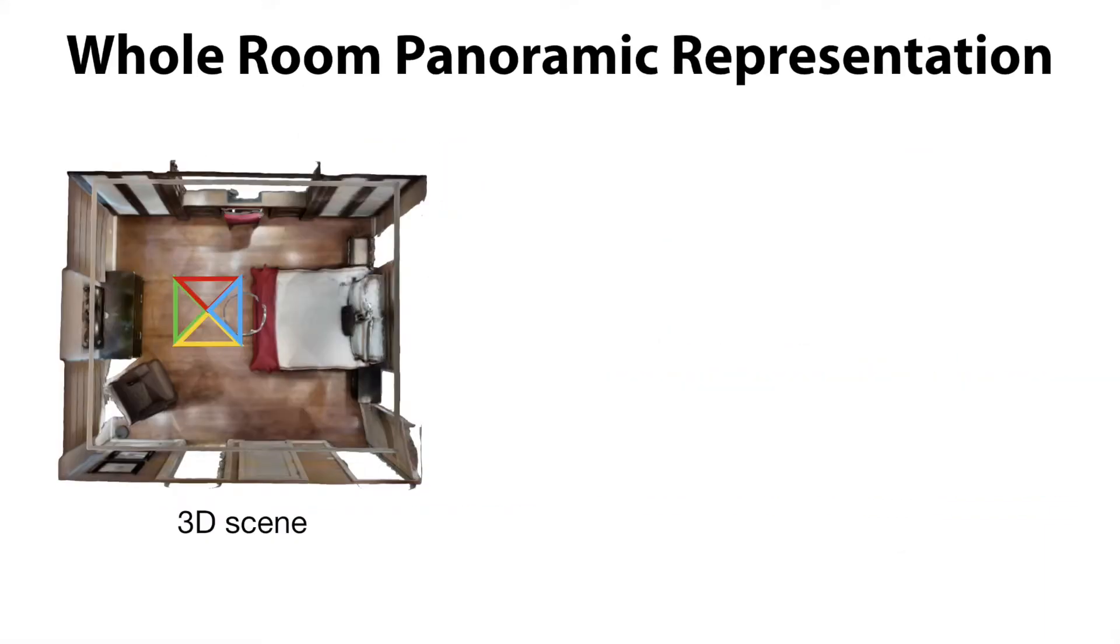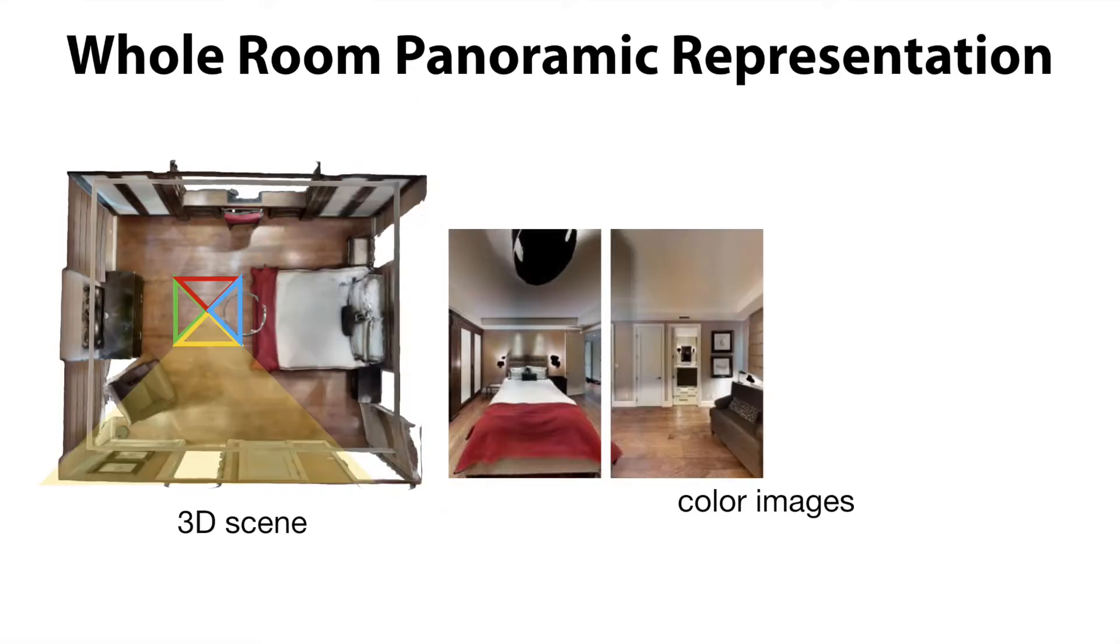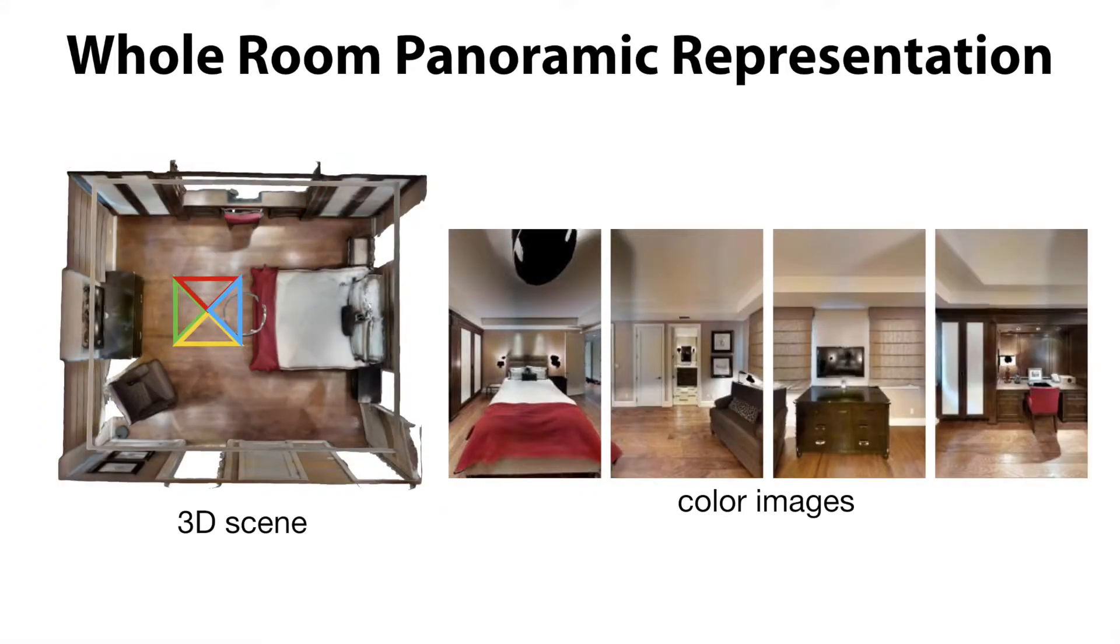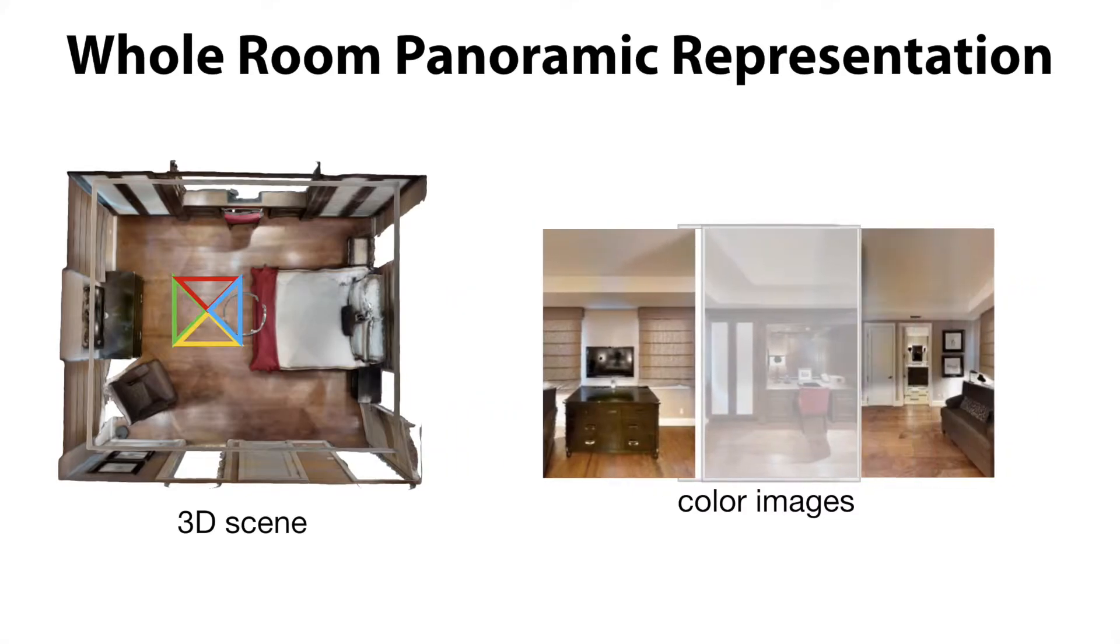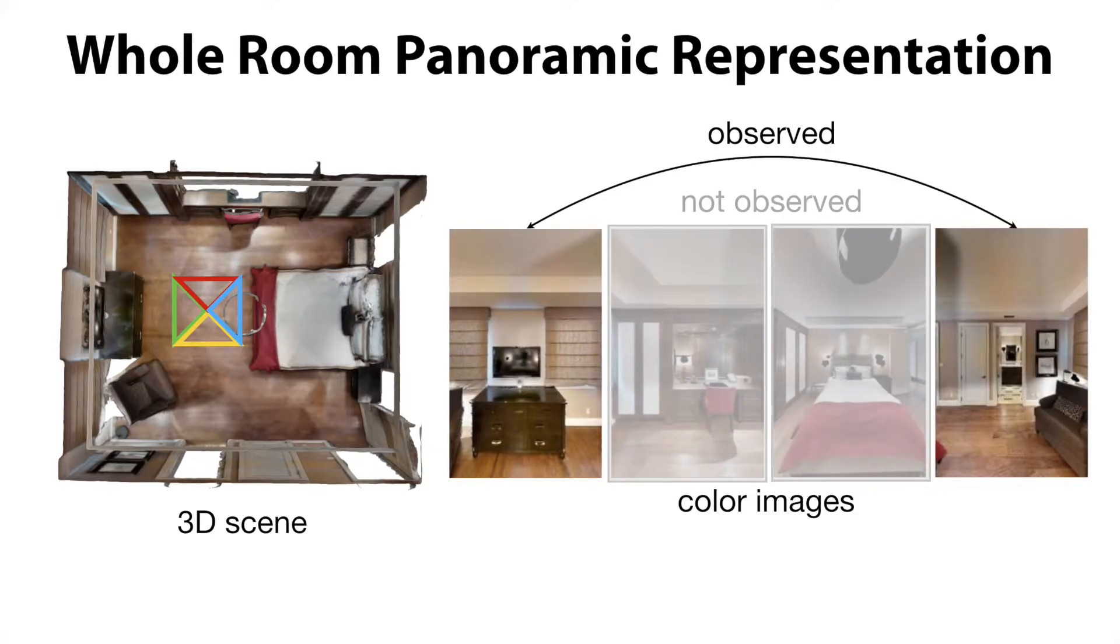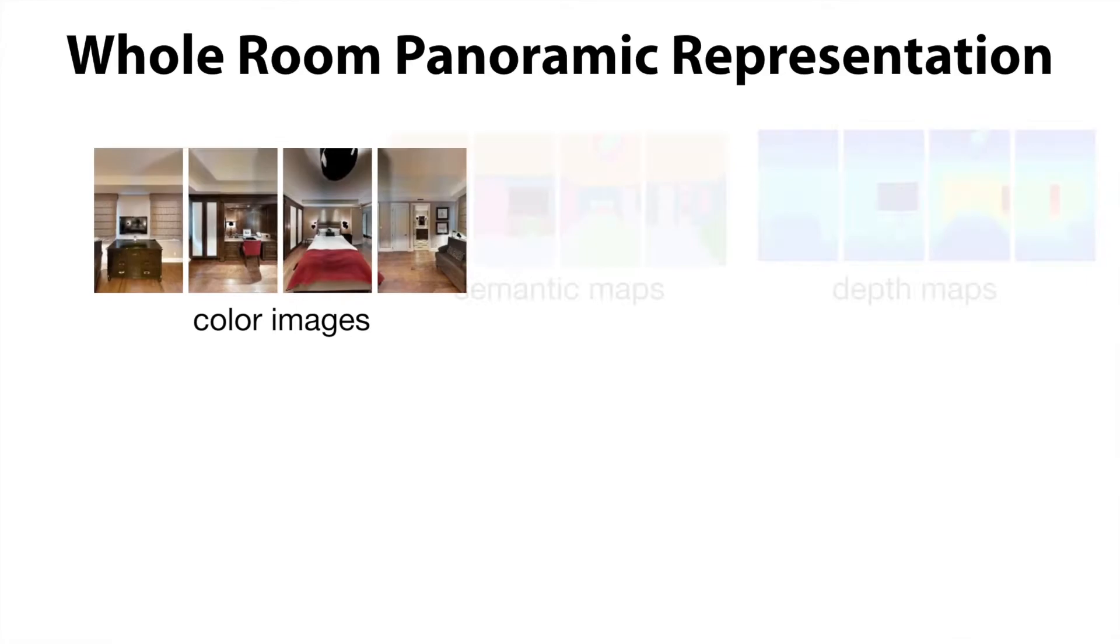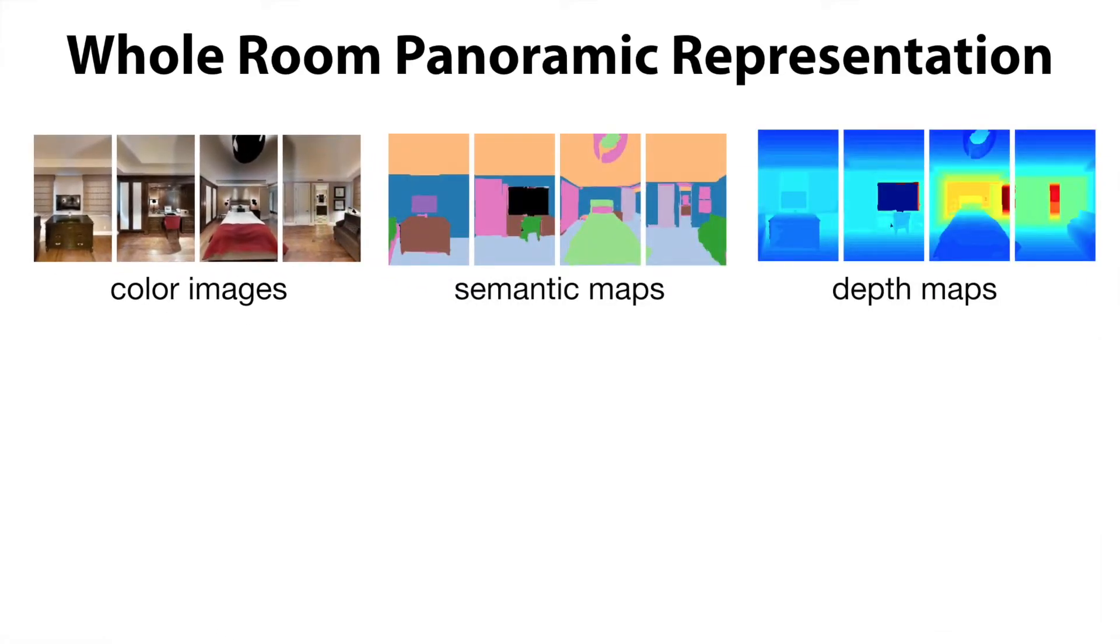We represent 3D scenes using a panorama. Note that the views are circularly connected. Hence, observing the inner two views is equivalent to observing the outer two views of its shifted panorama. In this panorama, each pixel contains information regarding color, semantic identity, and 3D structure.